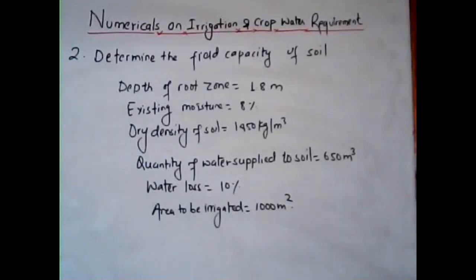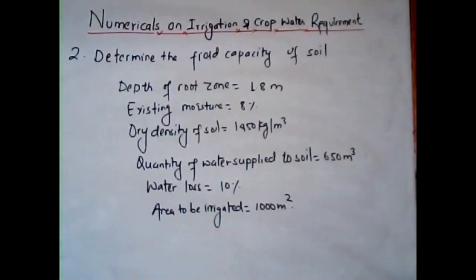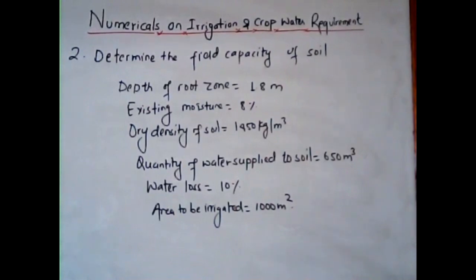The second problem requires us to determine the field capacity of the soil from the following data: depth of root zone = 1.8 m, existing moisture in the soil = 8%, dry density of soil = 1450 kg/m³, quantity of water supplied to the soil = 650 m³, water lost = 10%, and area to be irrigated = 1000 m².